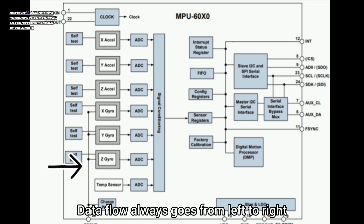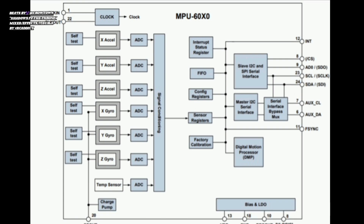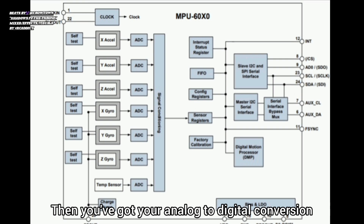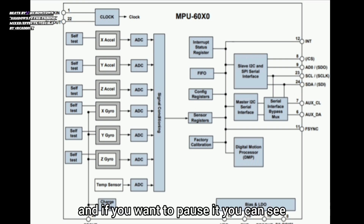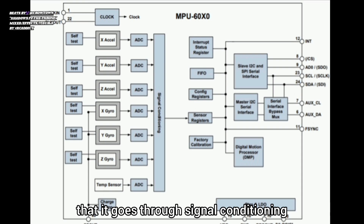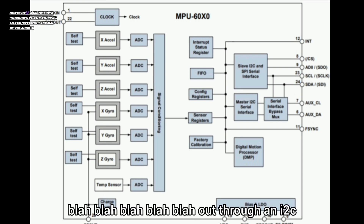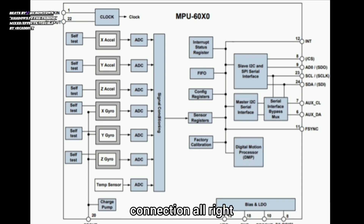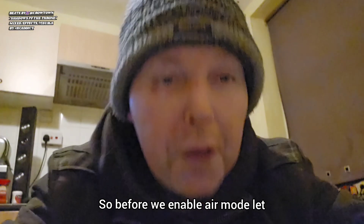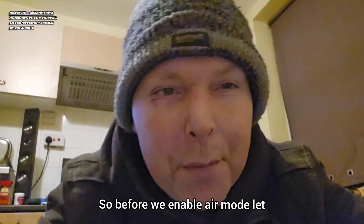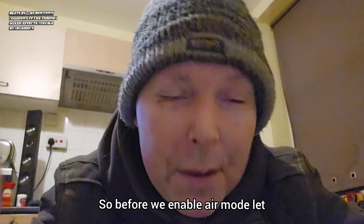Data flow always goes from left to right. Then you've got your analog-to-digital conversion. If you want to pause it, you can see it goes through signal conditioning and out through an I2C connection. So before we enable air mode, let me think of three scenarios.